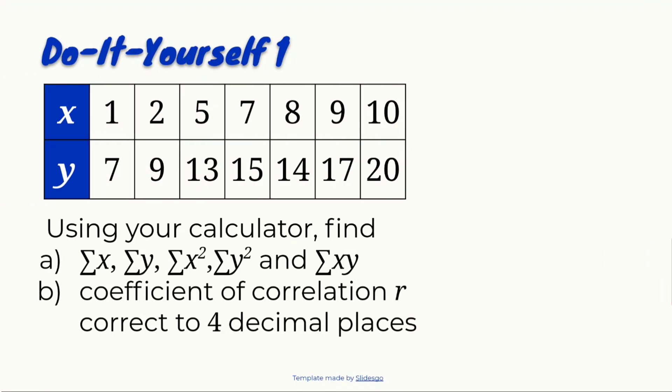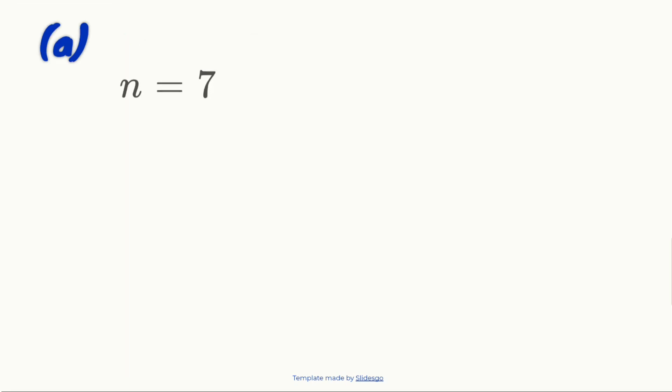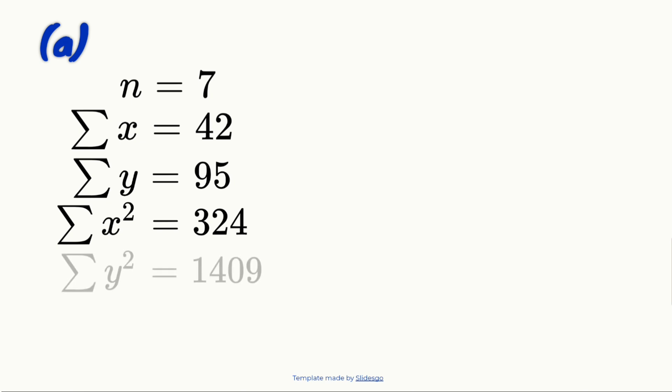Now let's answer question A. From the calculator, list out: N equals 7, Σx equals 42, Σy equals 95, Σx² equals 324, Σy² equals 1,409, and Σxy equals 660.